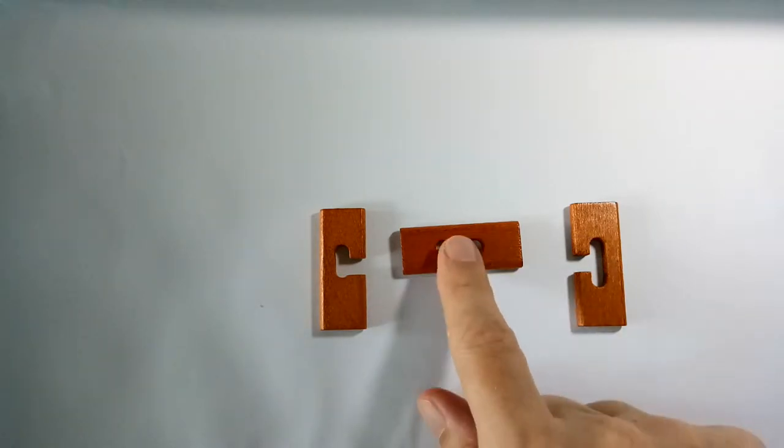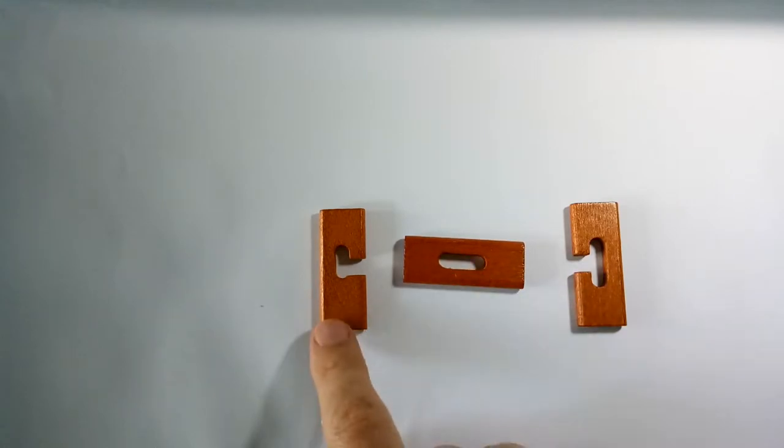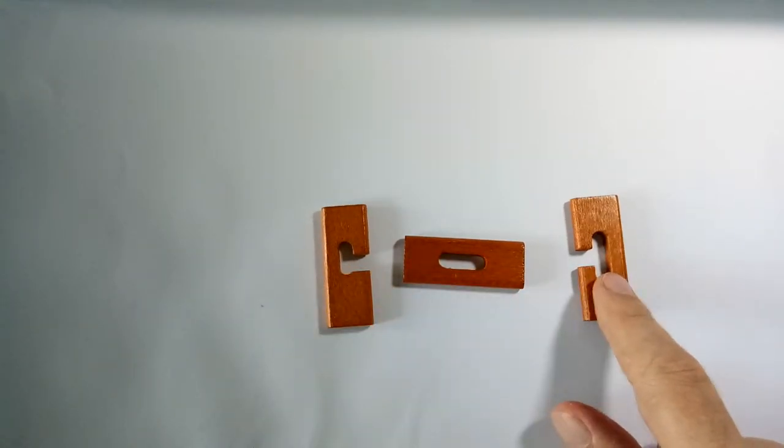This puzzle has three pieces: a piece with a hole in the middle, a piece with a hole and an opening, and a piece with a bigger hole and an opening as well. How do you put this puzzle back together?